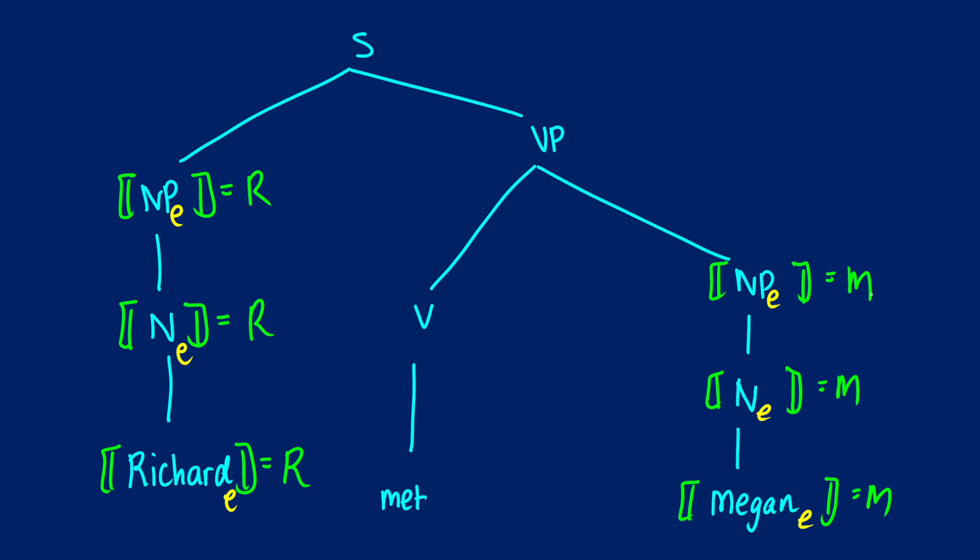Okay now in terms of met, what is met? Well met is a transitive verb. So it's an e-e-t. It's taking an entity, it's taking another entity, and then it's giving us a truth value. So this is going to pass up as we go through our tree, but when we get to the verb phrase we're going to take in an entity. So now we're no longer searching for two entities, just one, and then at the sentence level we're going to pick up another entity.